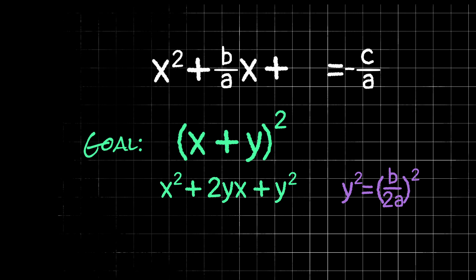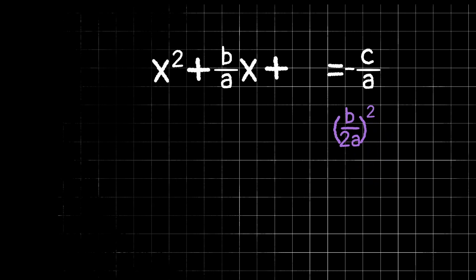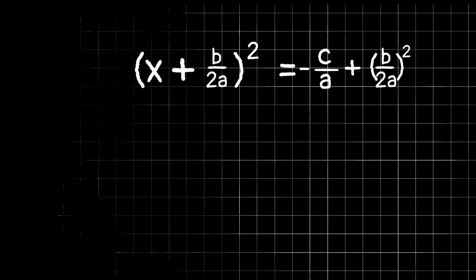If we do that, then we can work back to get this x plus y quantity squared. So if I add b over 2a quantity squared to this side, then I must add it to the right side of my equation as well in order to keep things balanced. But now in doing so, I can now rewrite the left side of our equation as x plus b over 2a quantity squared. And if you still aren't really convinced by that, go ahead and multiply out x plus b over 2a quantity squared and see if we get right back to that left side of our equation.